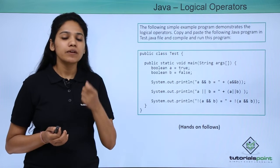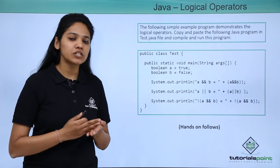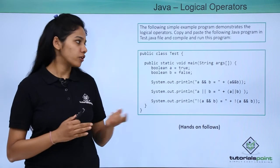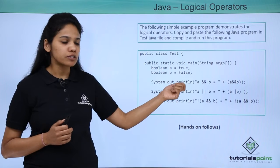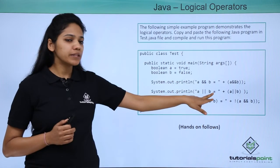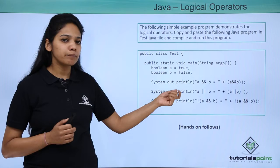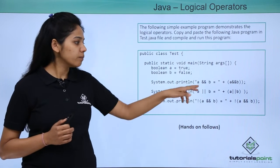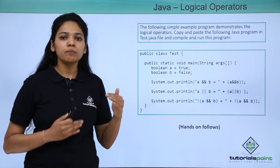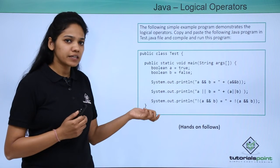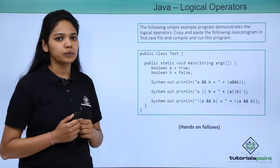a boolean data type holds one bit of information, which allows you to hold information either true or false. In this case, A is holding true and B is holding false. The operations to check are: A AND B — what will be the resulting value? A OR B, and then the NOT of A. We have created a program to run practically and see what the output will be.